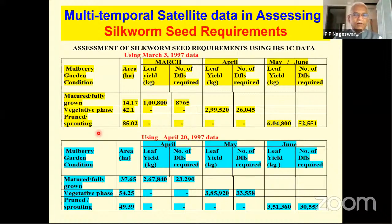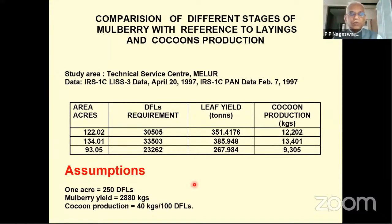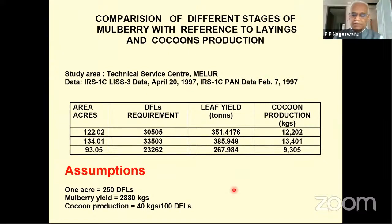Once you know the number of DFLs that can be reared, cocoon production forecast can also be achieved. We make assumptions such as: one acre of mulberry garden can support 250 DFLs, mulberry yield of 2,800 kilograms per hectare, and 40 kg cocoon can be produced per 100 DFLs. These assumptions need fine-tuning by changing these numbers appropriately. We took a bold step of making a cocoon production forecast based on DFLs required, leaf yield available, and area under mulberry garden, and published this paper at an international seminar. We are further improving this technology.